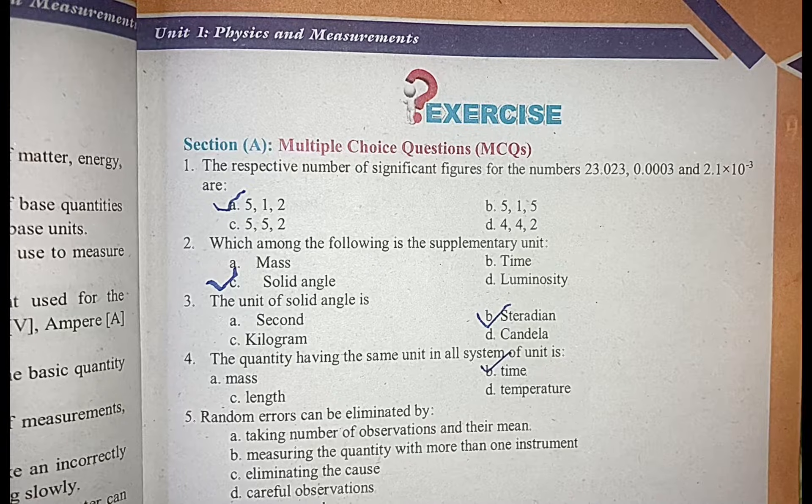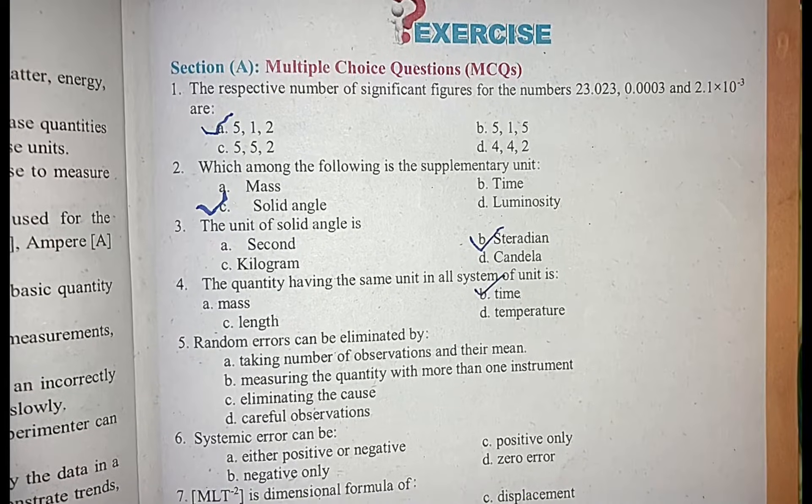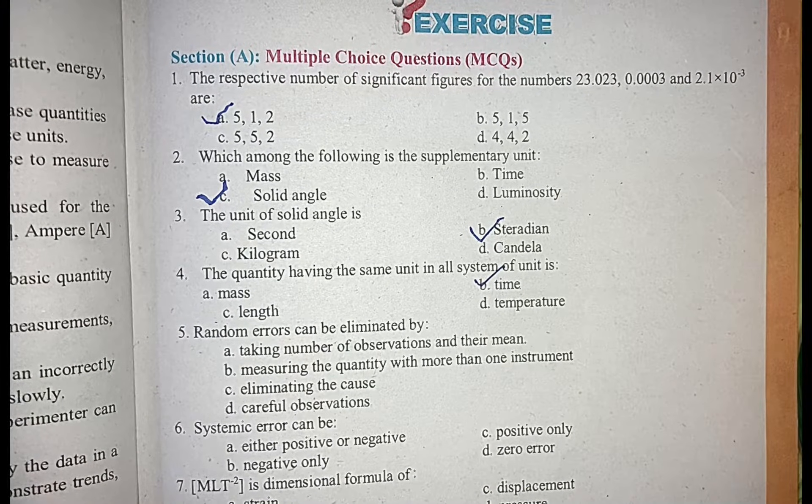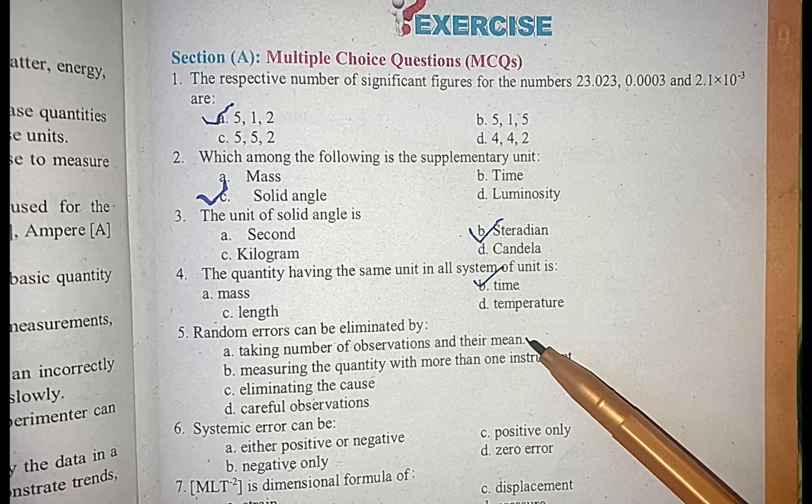MCQ number 5: random error can be eliminated by taking number of observations and their mean.